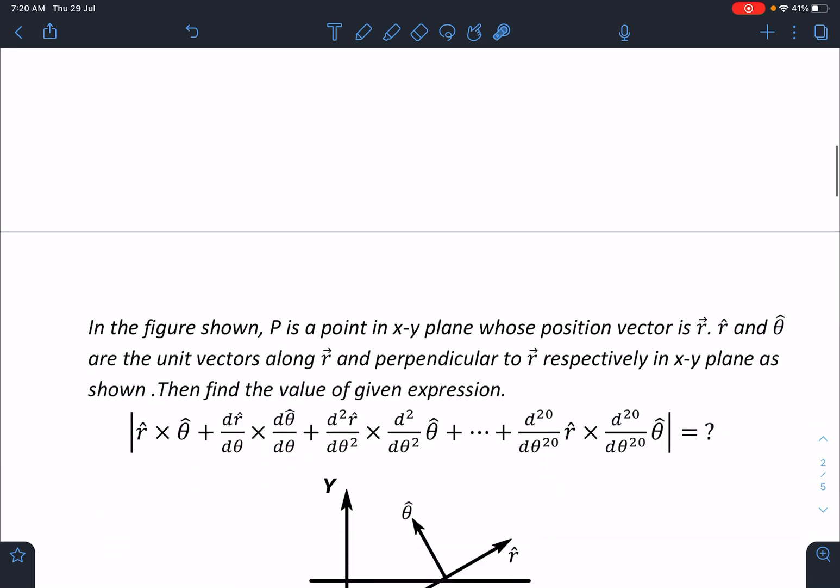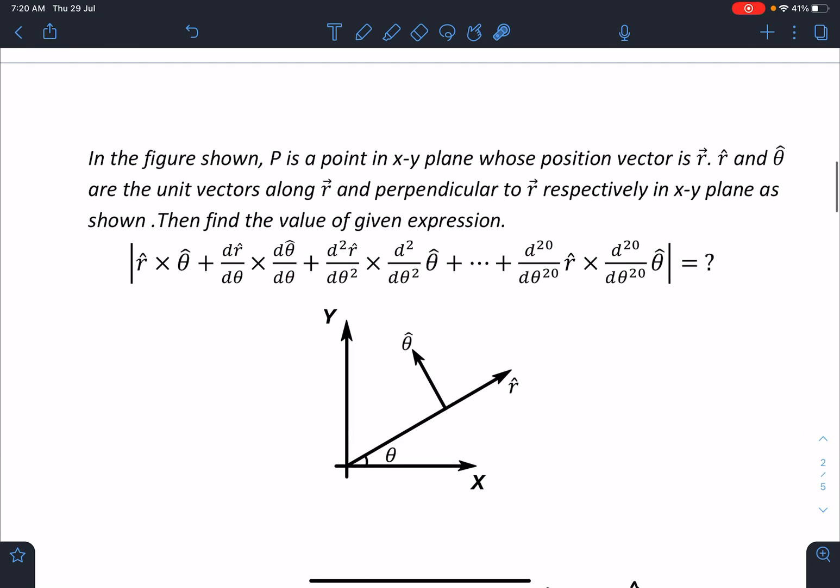Here is the problem statement. In the figure shown, P is a point in the xy plane whose position vector is r. R cap and theta cap are the unit vectors along vector r and perpendicular to r vector respectively in the xy plane. Find the value of the given expression: mod of r cap cross theta cap plus dr cap/dθ cross d(theta cap)/dθ, and like this, going up to the 20th derivatives.